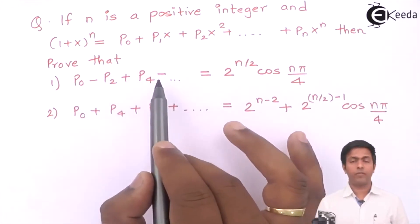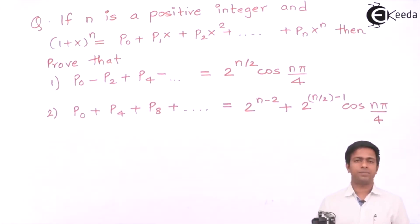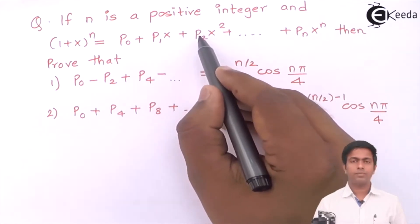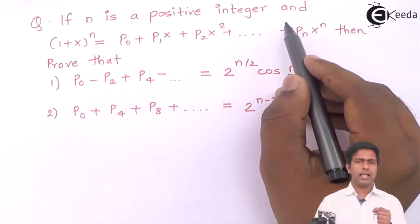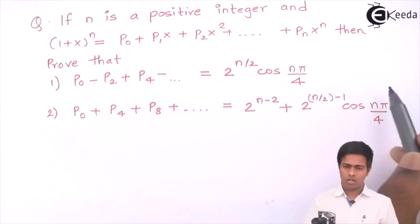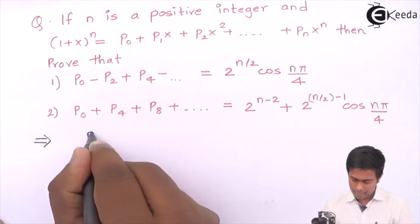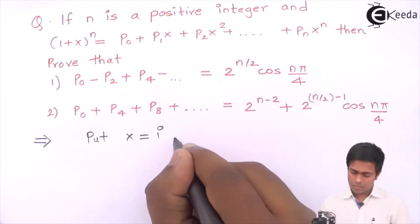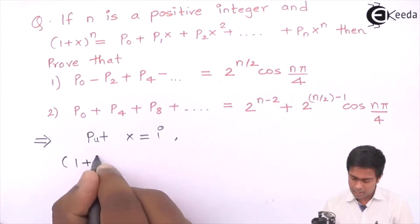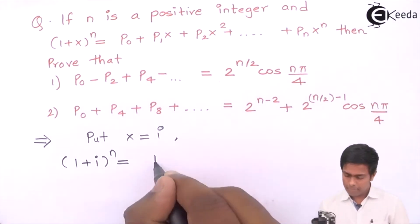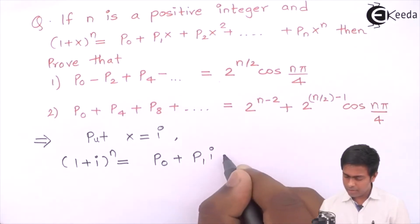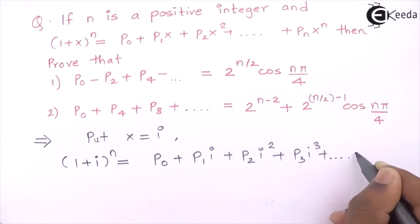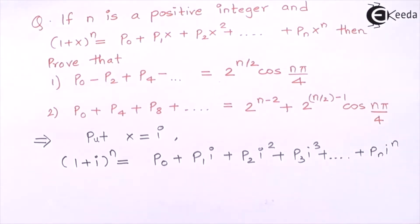By putting x = i, we get i² = -1, so p2·x² becomes -p2; and x⁴ = i⁴ = 1, so we get +p4, and so on. So let's put x = i. This gives us: (1 + i)^n = p0 + p1·i + p2·i² + p3·i³ + ... + pn·i^n.